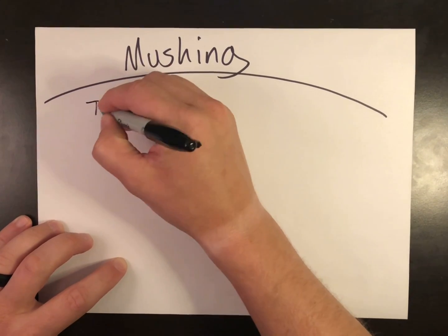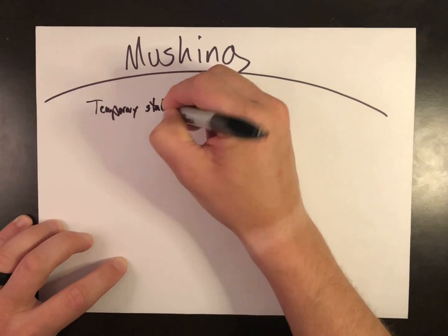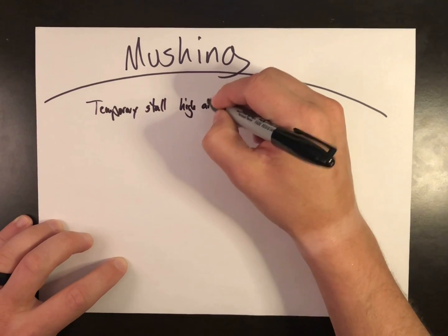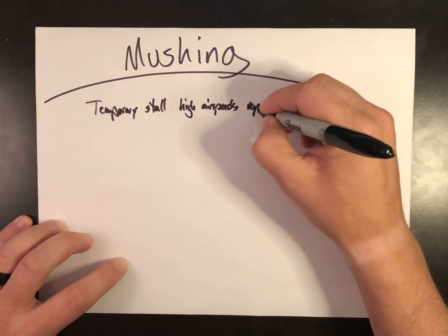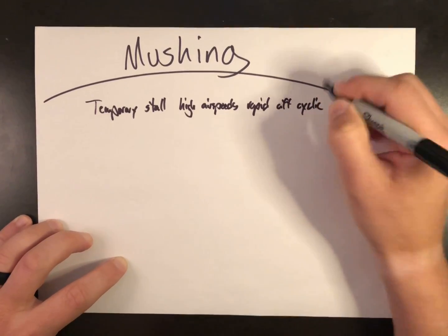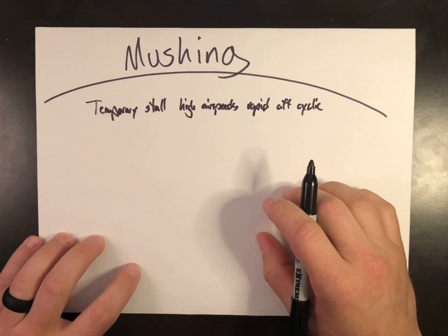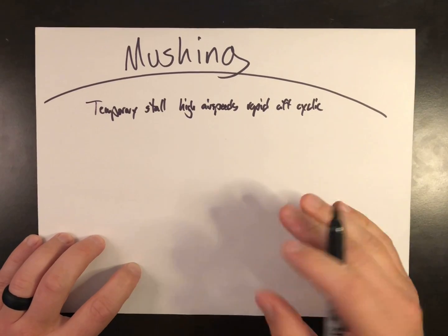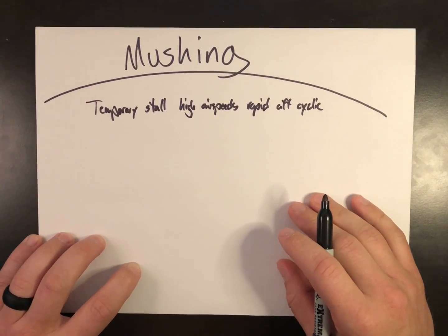Simply put, mushing is a temporary stall condition as a result of being at high airspeeds while conducting a rapid aft cyclic application. It's nothing more than a stalling of the airfoil. Both planes and helicopters can stall when aggressively recovering from a dive because of how it affects the critical angle and the resultant relative wind acting on the airfoil.